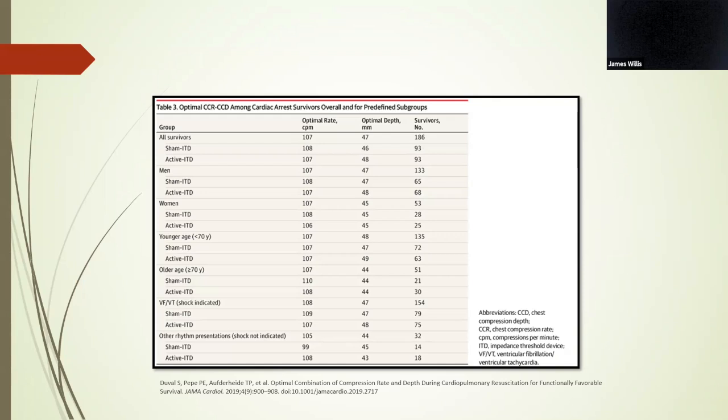More recently, there was a secondary analysis of a trial that originally evaluated the use of impedance threshold devices in CPR for out-of-hospital arrest. So the intervention group, they called that active ITD, and the control group was sham ITD. And the EMS agencies had also been using defibrillators that collected data on chest compression rate and depth. And they calculated the optimal combination of compression rate and depth associated with the maximal probability of survival with a modified Rankin score of three or less at time of discharge. So survival with favorable neurologic status. And the compression depth in this analysis was 47 millimeters, which is slightly under two inches, and the optimal compression rate was 107 times per minute.